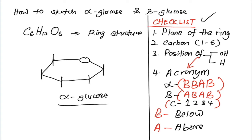And at carbon number six, the carbon will attach to two hydrogen atoms and a hydroxyl group. So we have carbon number one, number two, three, four, five, and six.